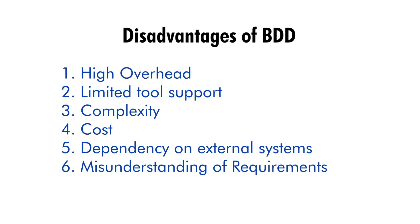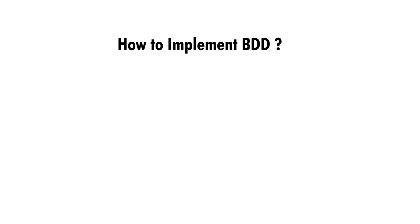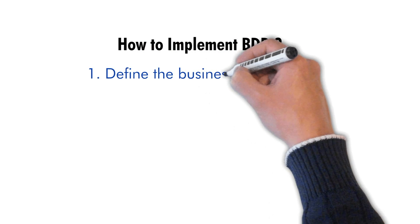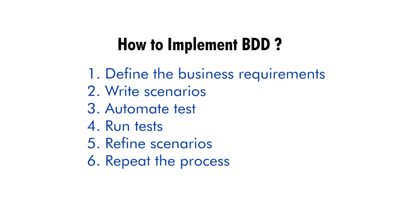How to implement BDD in your project. Define the business requirements — start by defining the business requirements for the software system. This should involve collaboration between different stakeholders such as business analysts, product owners, and developers. Use clear and concise language to describe the desired behavior of the system. Write the scenarios — write executable scenarios that describe the behavior of the system. These scenarios should be written in language easily understandable by all stakeholders, such as the Given-When-Then format.